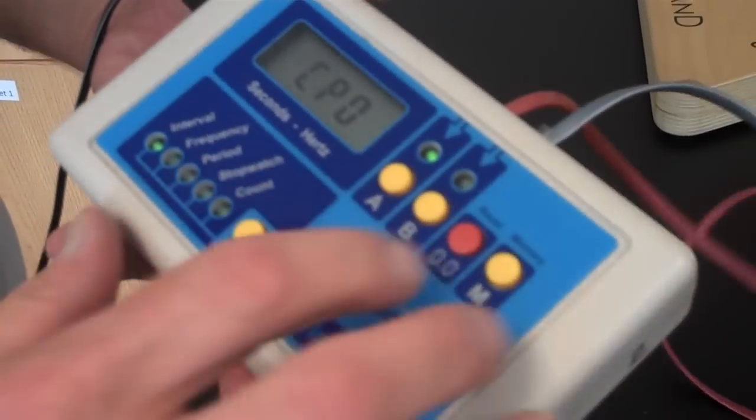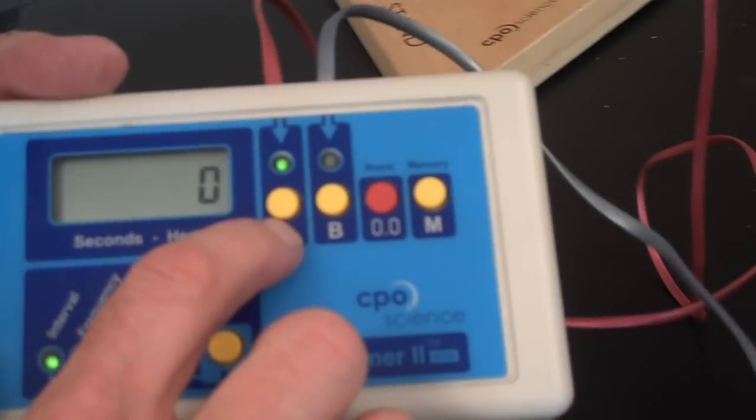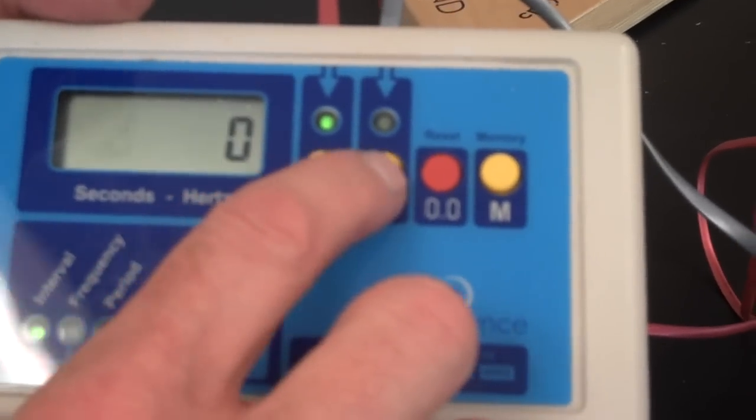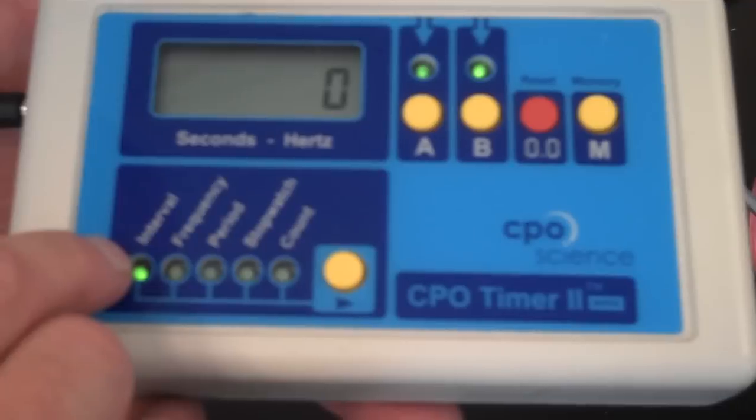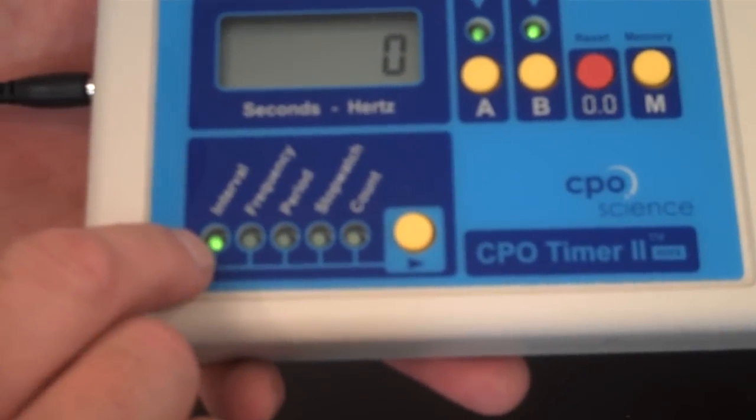Now what I'm going to do is reset everything, and I'm going to make sure that light A and B are on. The timer is going to be set to interval, and I'm going to allow the cart to roll through the ramps.